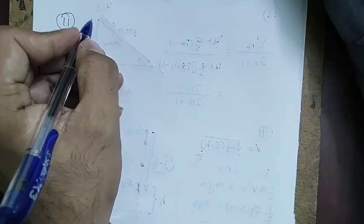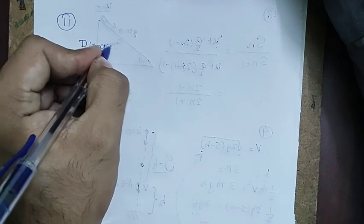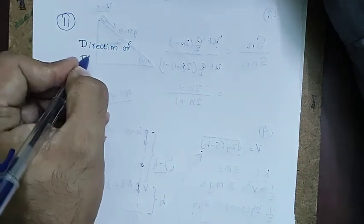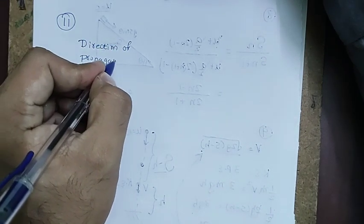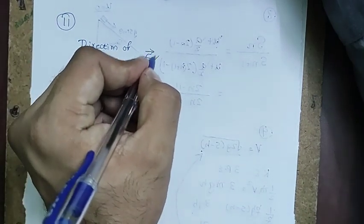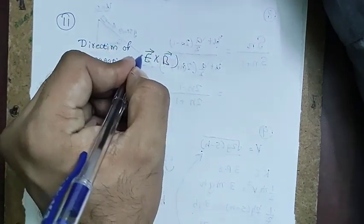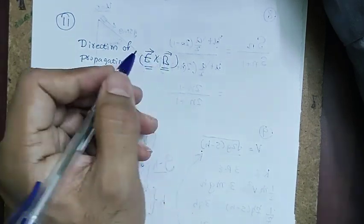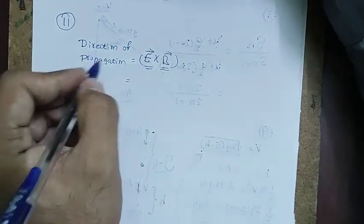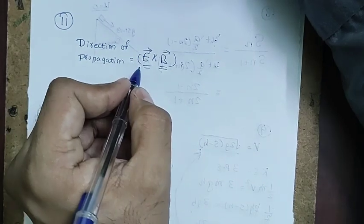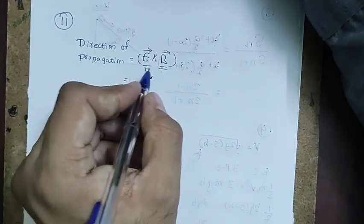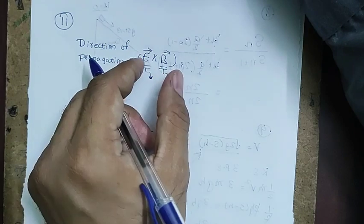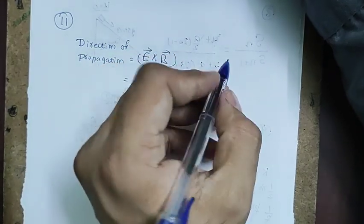Question 11 is about electromagnetic waves. The direction of propagation is given by E × B. The wave propagates along the x-axis, so E and B lie in the y-z plane and must be perpendicular to each other.